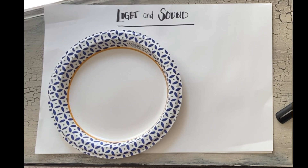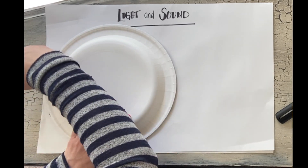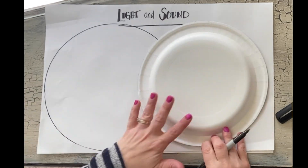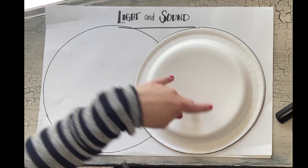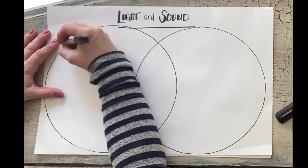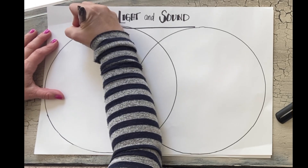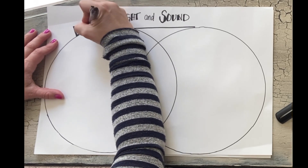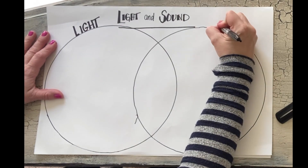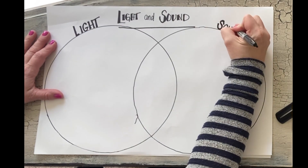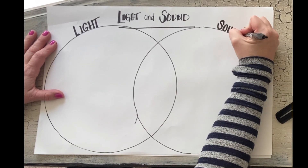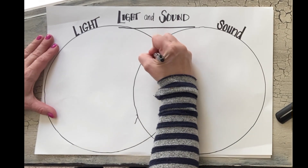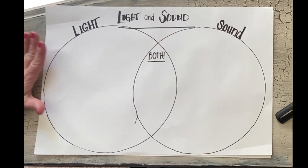To do this we are going to make a Venn diagram. I'm going to use my paper plate and trace around each one to make my Venn diagram. I'm overlapping the two circles on purpose because that area is where both light and sound are alike. I'm labeling each circle — one is light, one is sound — and then that center overlapping part is for how they are both alike. Here is the Venn diagram, all set up and ready for us to use.